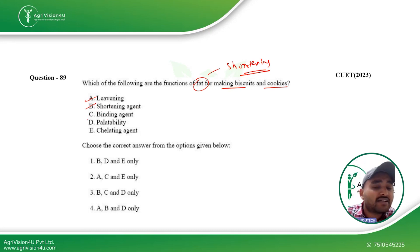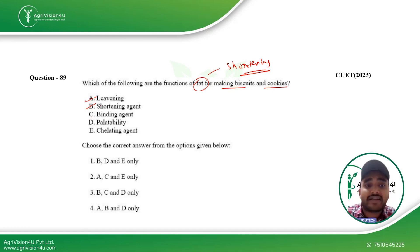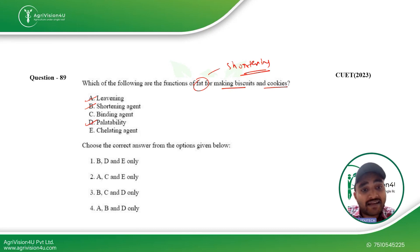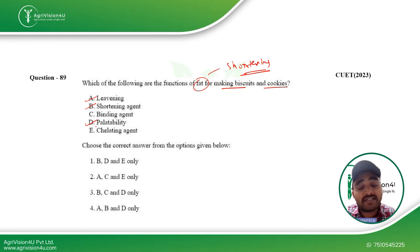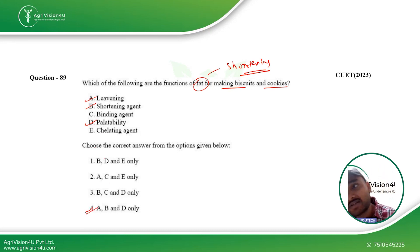Regarding binding agent — some people say fat acts as a binding agent, but that is not correct. Fat never acts as a binding agent; only water and gluten formation can act as binding agents. For palatability, yes — fat makes biscuits and cookies more tender, soft, and chewable. For chelating agent — no, not at all. So A, B, and D (the fourth option) is the right answer.